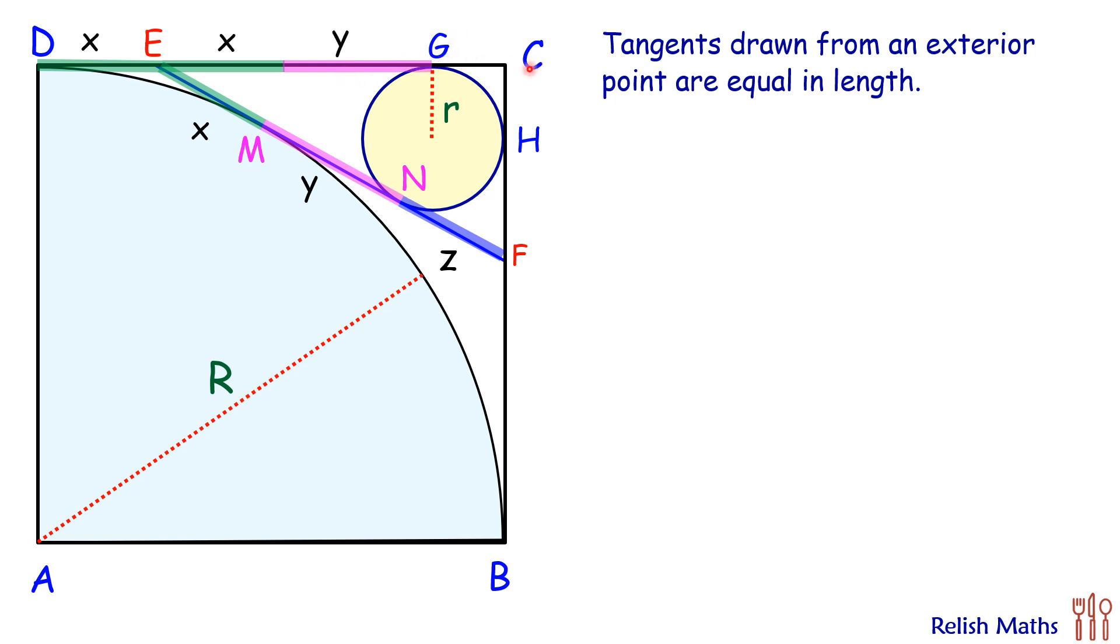Now GC is the same as radius of the circle, so the length of GC is r. So the length of the full square side DC is nothing but 2x plus y plus r. But DC is the same as R, the radius of the bigger circle. So we can say that R equals 2x plus y plus r. Now if we shift this r on the other side, R minus r equals 2x plus y, and putting R minus r which is given as 10, we get our first equation: 10 equals 2x plus y.